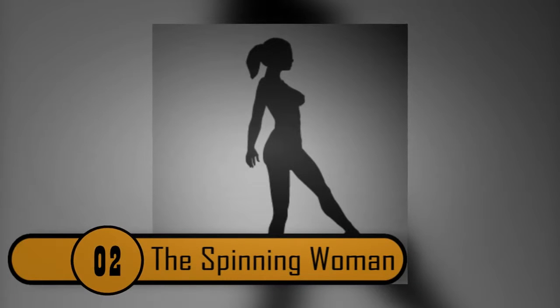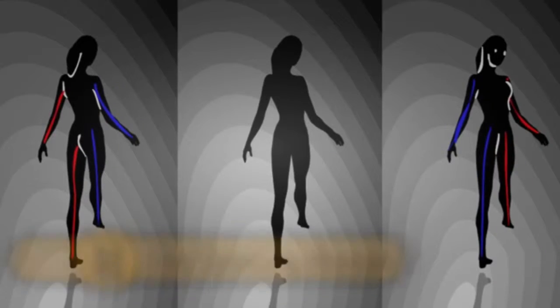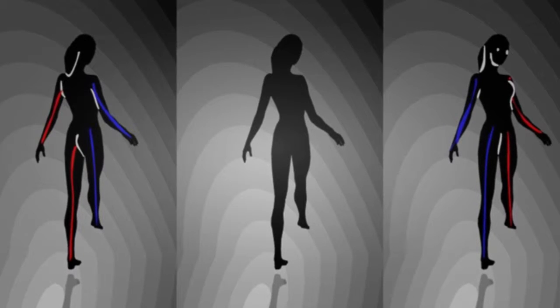The Spinning Woman. When you look at the woman, she seems like a woman spinning in one direction. When you look at her for too long, however, it plays tricks on you. It's difficult to tell what direction she is actually spinning.